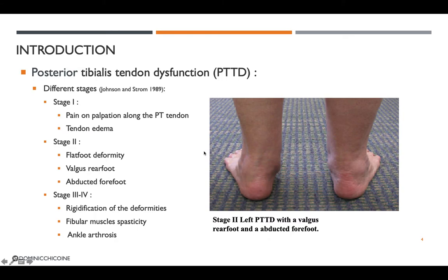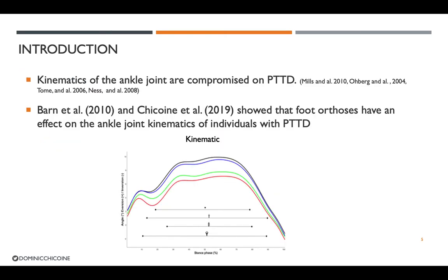This is also known as the 'too many toes' sign. In stage 3 and 4, there is rigidification of those deformities, with fibular muscle spasticity and ankle arthrosis can also be seen, so there is an increase in the ankle eversion angle at the ankle joint in the PTTD population compared to control individuals.